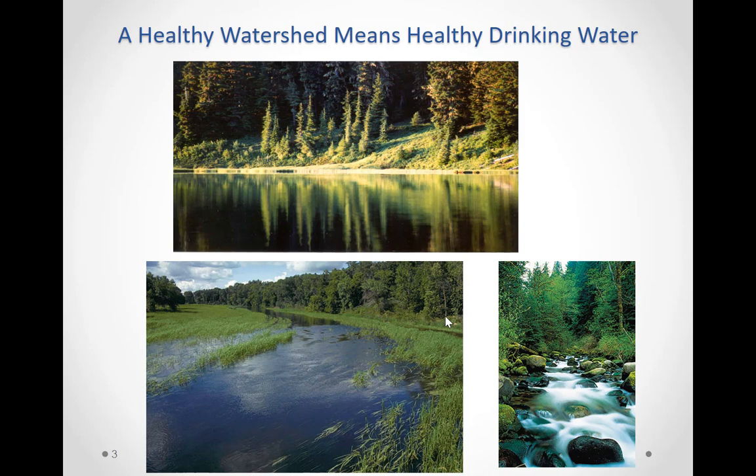Here we can see a healthy watershed in different places of the U.S. — one in Minnesota and another in Oregon — both showing clean water with low agricultural runoff. Ensuring the proper health of a watershed means that all surface water and groundwater sources will be healthy.